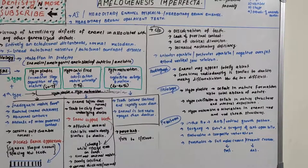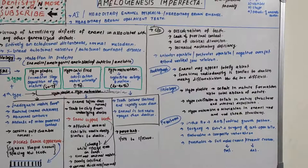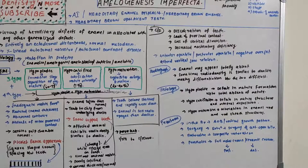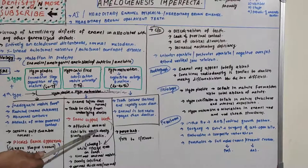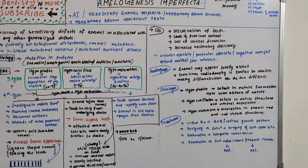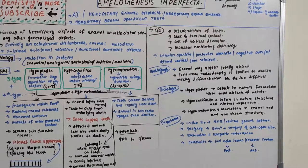In hypocalcified AI, the enamel is softer than normal and tends to chip away from the underlying dentine. The teeth have a peculiar 'snow capped' appearance — white opaque areas visible on the teeth. The enamel matrix is normal but calcification is very poor, with normal thickness. Importantly, the affected enamel exhibits radio density similar to dentine, making it very difficult to differentiate enamel from dentine on radiographs.